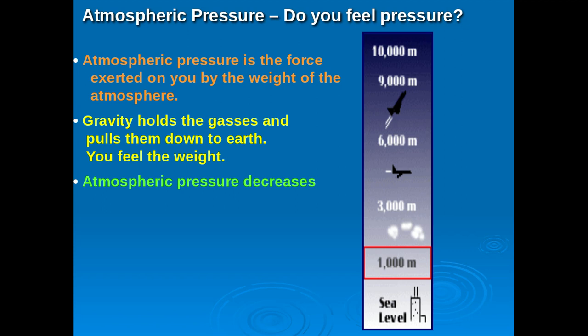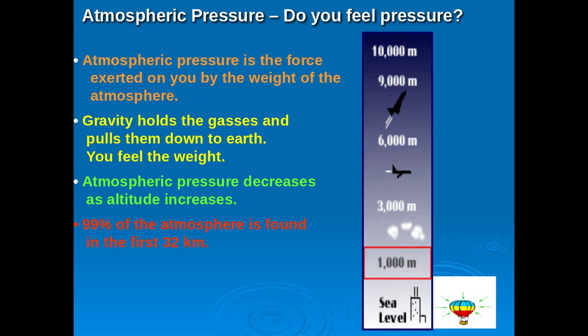As we ascend in the atmosphere and move from the troposphere into the stratosphere, mesosphere, and so forth, atmospheric pressure will decrease. We attribute this to the fact that the atmosphere gets very thin and the weight of the atmosphere gets less. So the higher you go, the less weight on your head — atmospheric pressure decreases as altitude increases. When you look at the distribution of atmospheric layers — troposphere, stratosphere, mesosphere, and thermosphere — 99% of the atmosphere is found in the first 32 kilometers, covering the troposphere and lower stratosphere. After that, the atmosphere gets thin very, very fast.